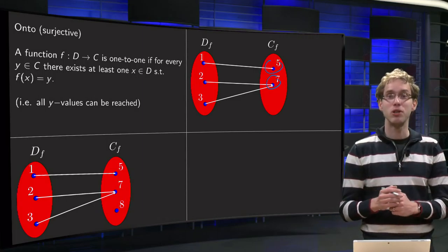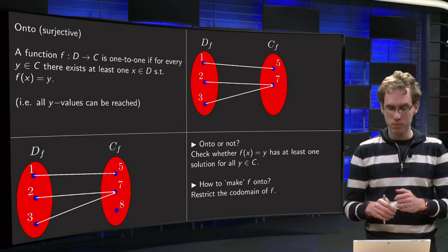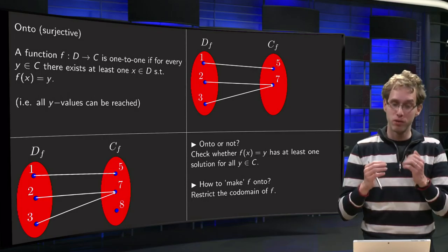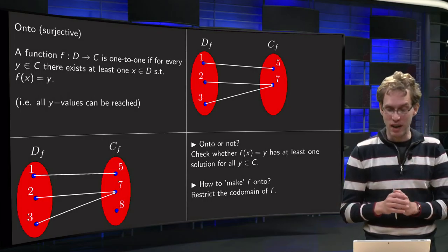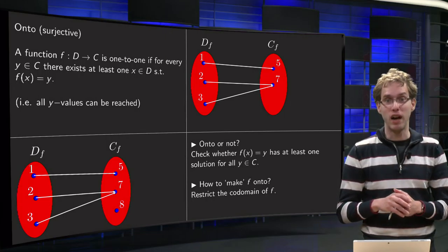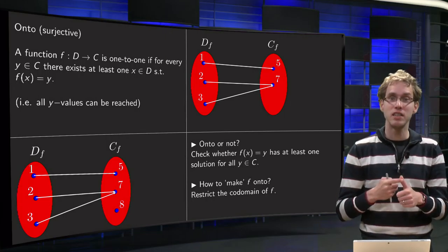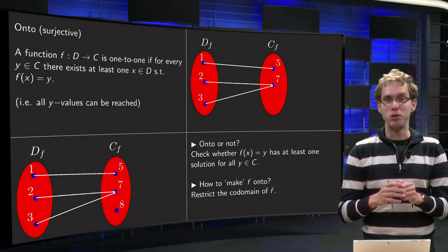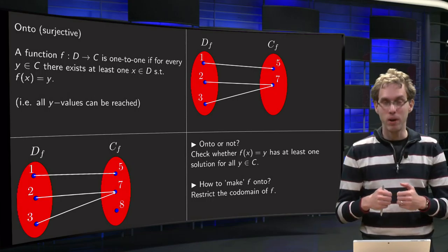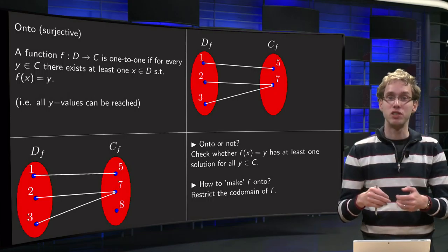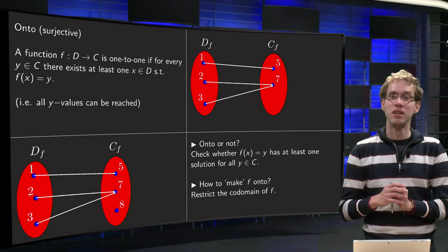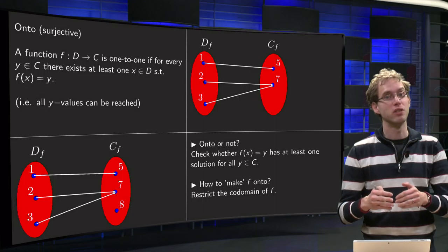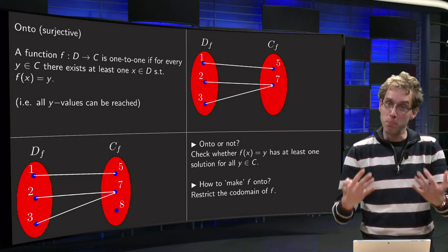And that also answers an important lesson. How can you see whether a function is onto or not? Well, first of all, check whether fx equals y has at least one solution for every x in the domain. So first lesson. Second part, you can always make a function onto if you restrict the codomain, if you restrict it such that all values can be reached. So now you know how to check whether a function is onto. And if it's not, you know how you are able to make your function onto.